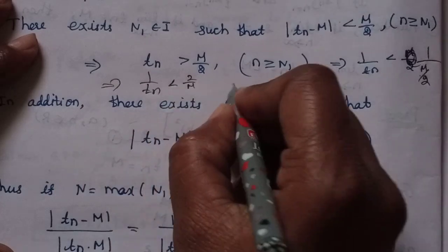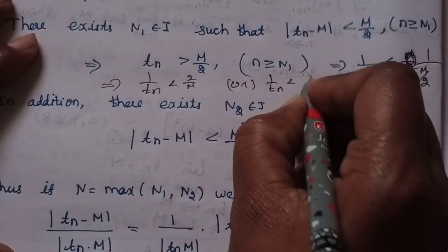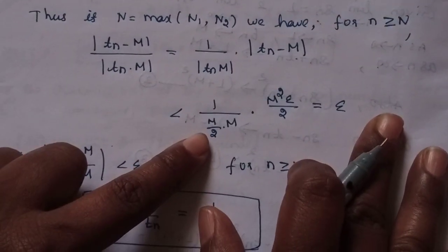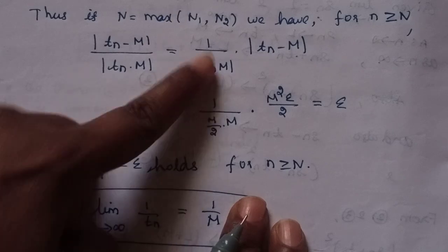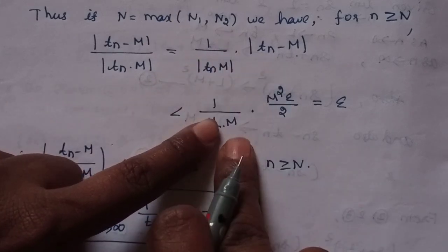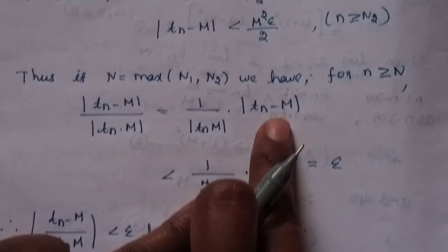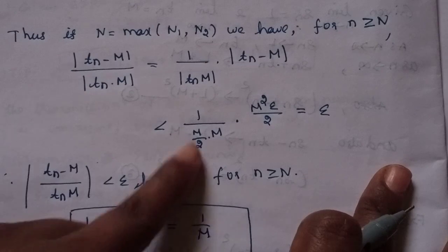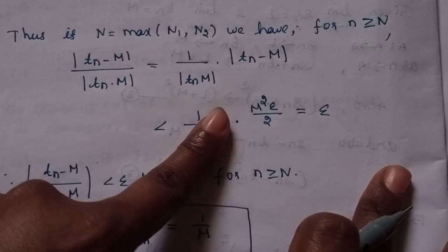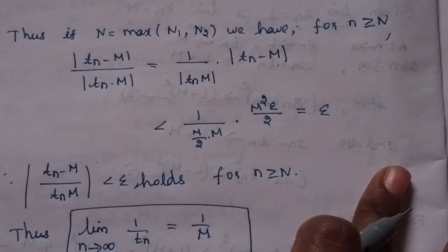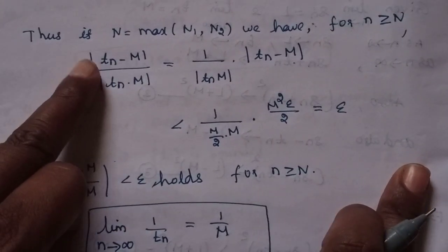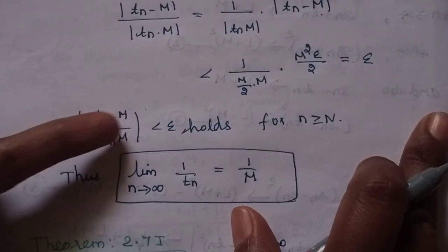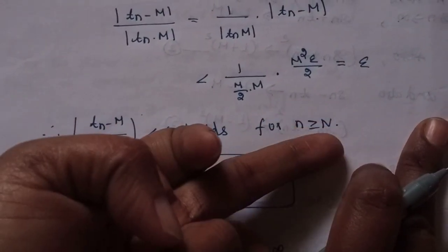We say 1 by tn less than 2 by m, already in the denominator m there is modulus of tn minus m less than m squared epsilon. So modulus of tn minus m divided by tn into m is less than epsilon, which holds for all n greater than or equal to N.